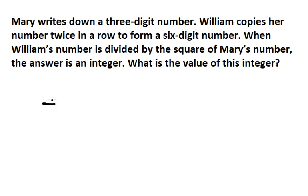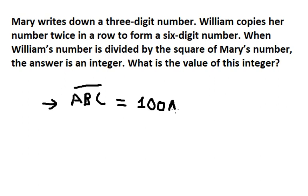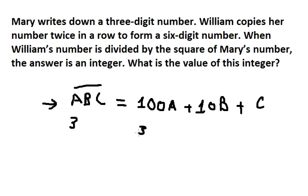I will represent the three-digit number as ABC. If we analyze this, we have 100 multiplied by A, plus 10 multiplied by B, plus C, because we separate them. For example, if A is the number three, that means we have 300. That's why we separate them in this way.